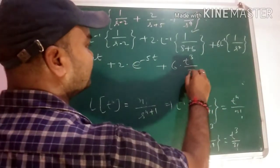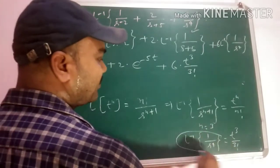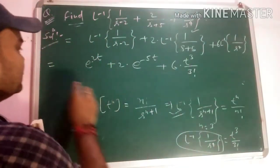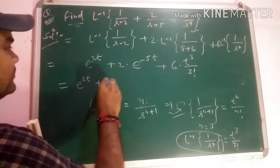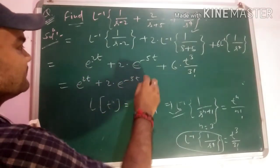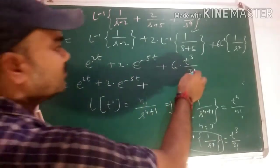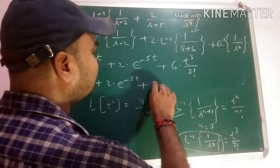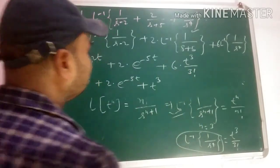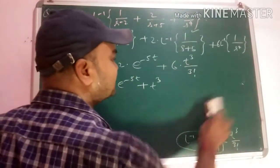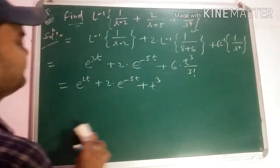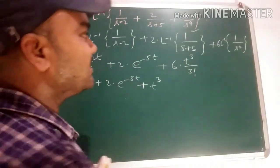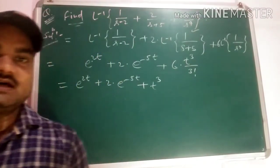So the final answer for the first question is: e^(2t) + 2·e^(-5t) + t^3. This is our answer. It's quite easy — we just need to know the Laplace transforms and then we can find the inverse easily. Let's do one more question.